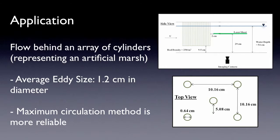One application of PIV is to study the flow behind an array of cylinders, which represents an artificial marsh. As you can see in the upper right picture, it is a demonstration of the setup in the laboratory. The diameter of the plastic cylindrical rods is about 0.64 cm, and the density of the rods is about 250 rods per square meter, which is a relatively low density. The bottom right picture shows the bird's eye view of the cylindrical rods.